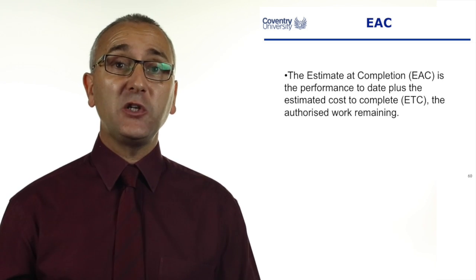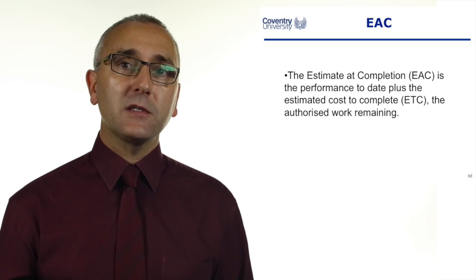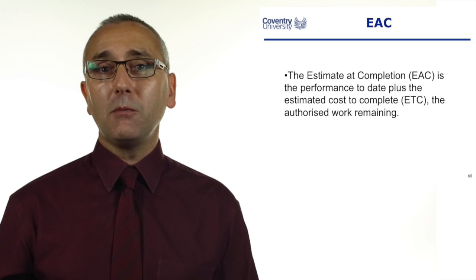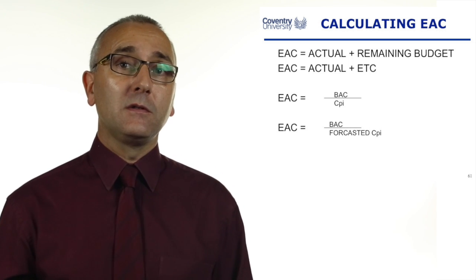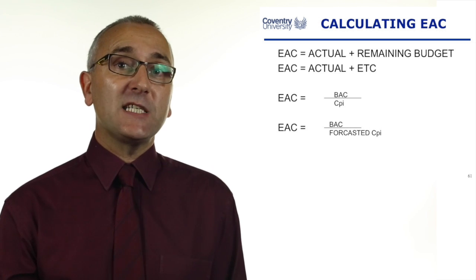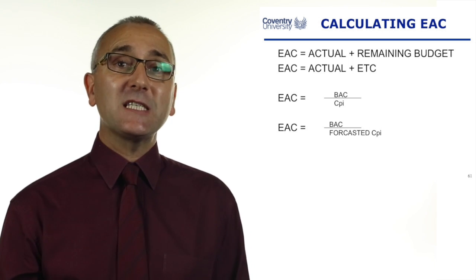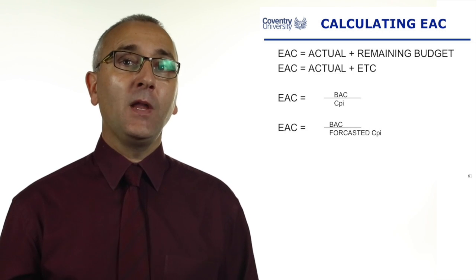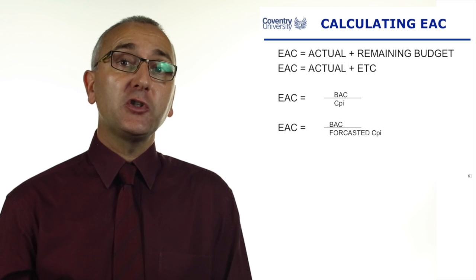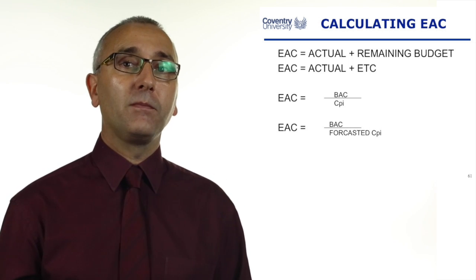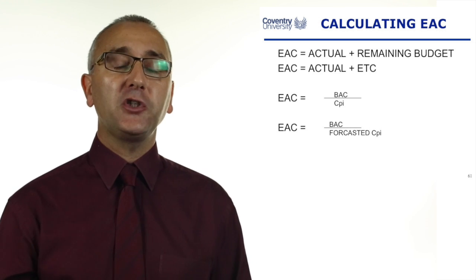In the earned value analysis seminar, we go through a project looking at its actual, earned value, and budget through its months, and different methods for calculating the total become more or less accurate over time. At the start of the project, the only thing we have is the remaining budget — there is no actual — so the estimate at completion is anything actually spent plus the remaining budget. Towards the end, a more accurate method is what's actually been spent plus the estimate to complete. There are also two methods using the CPI: if the current cost performance index is 0.9, the estimate at completion is the original budget divided by that factor, 0.9, using either the current CPI or a forecasted one based on future cost information.